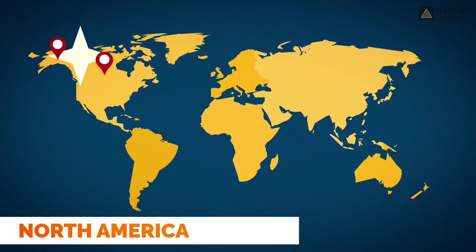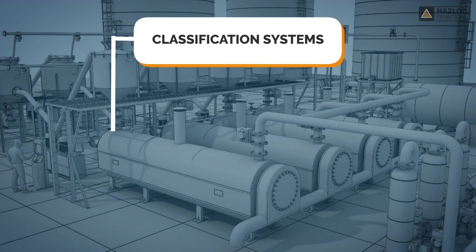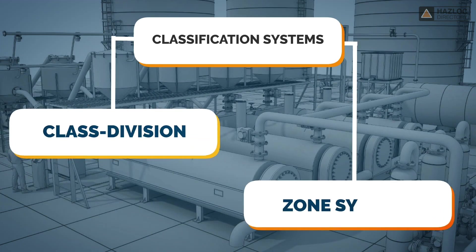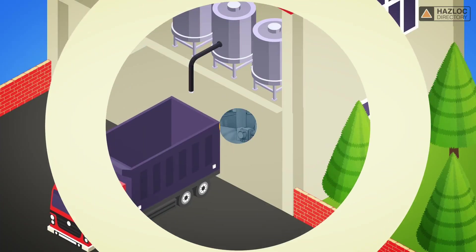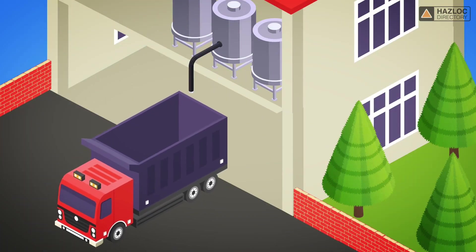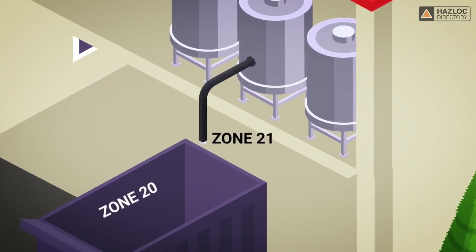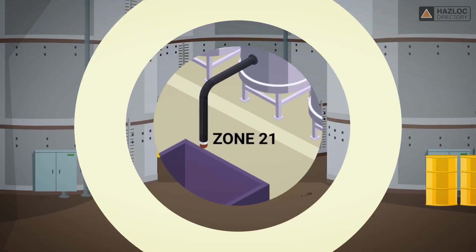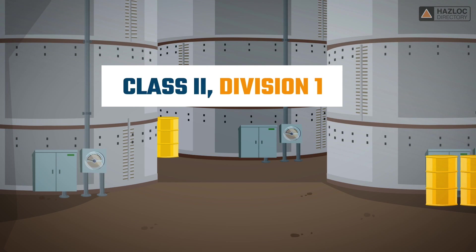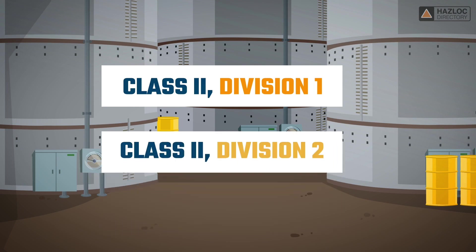In North America, there are two systems used to classify or group hazardous locations: the class division system and the zone system. Locations that are hazardous because of the presence of dust are defined in the zone system as zones 20, 21, and 22. In the class division system, they are class 2, division 1, and class 2, division 2.